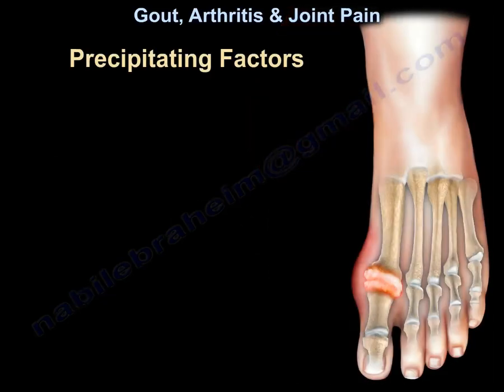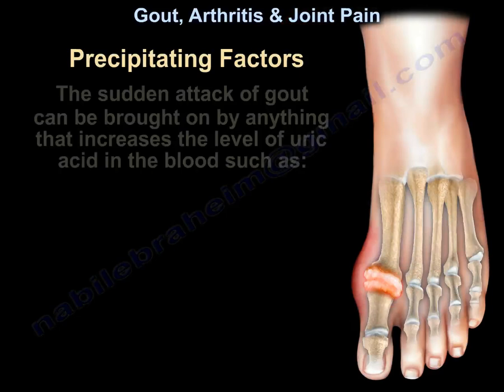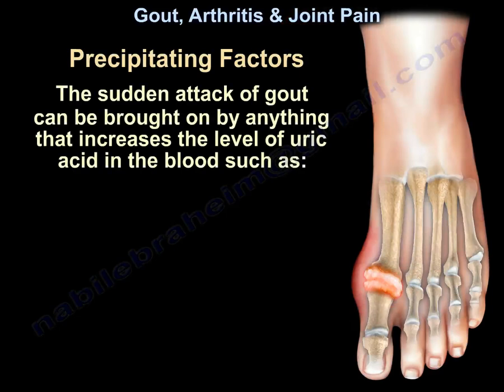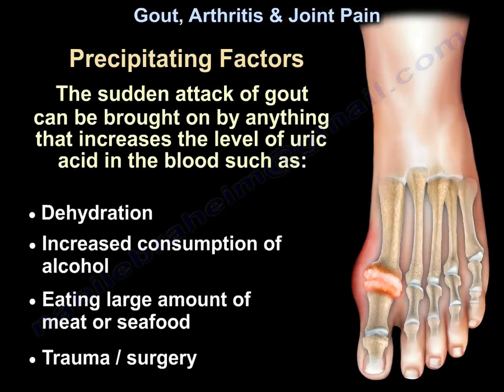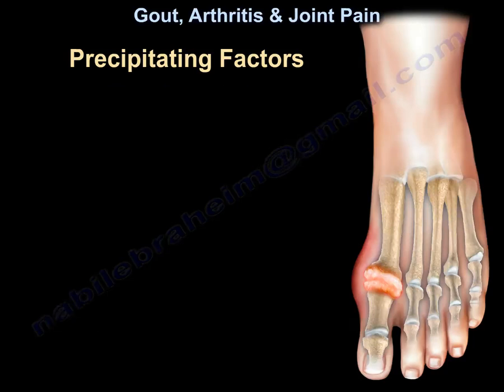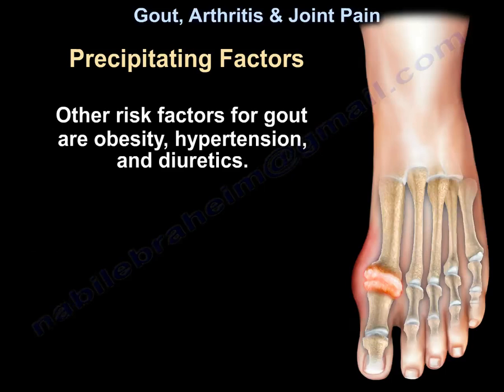What are the precipitating factors? A sudden attack of gout can be brought on by anything that increases the level of uric acid in the blood, such as dehydration, increased consumption of alcohol, eating large amounts of meat or seafood, or trauma and surgery. Other risk factors for gout include obesity, hypertension, and diuretics.